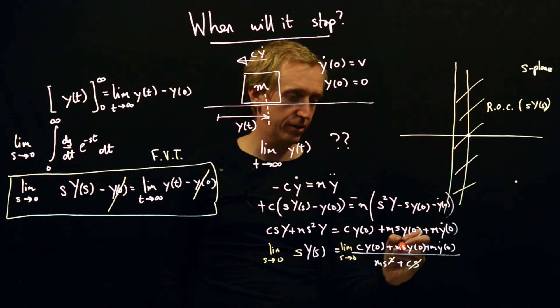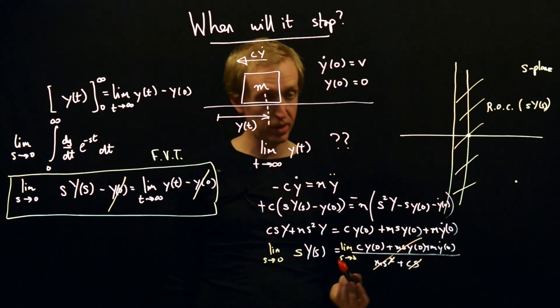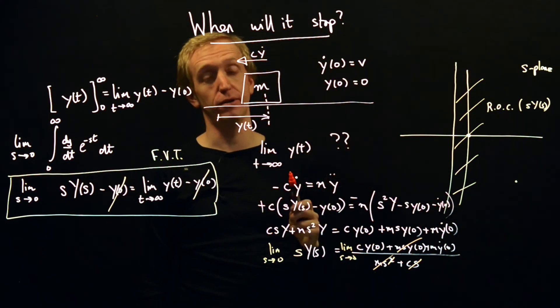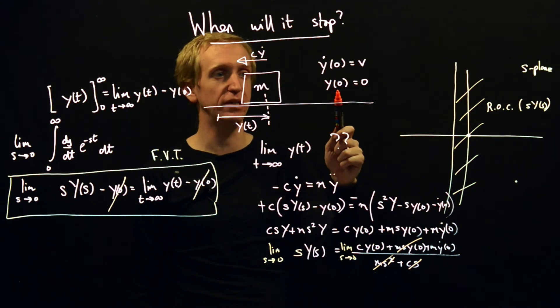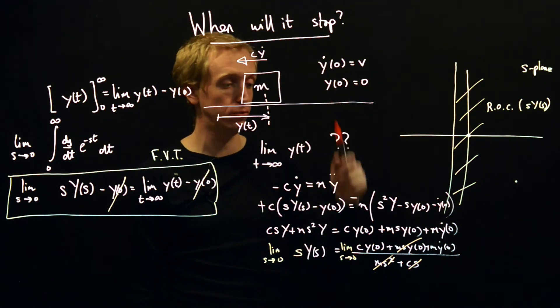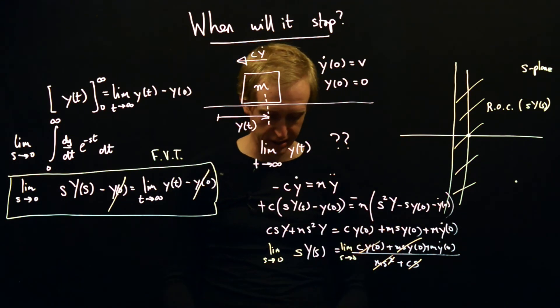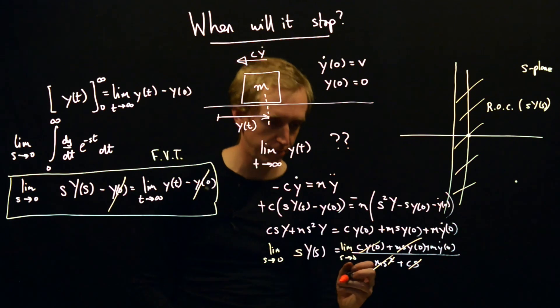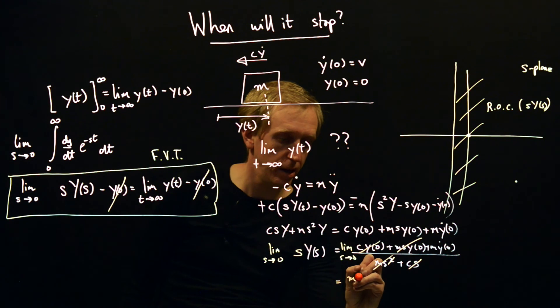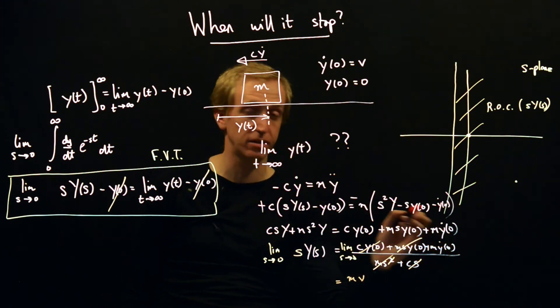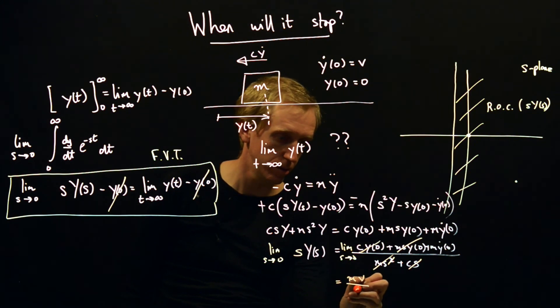Well, lim s goes to zero kills that term, it kills that term, and then we can also substitute in for our initial conditions, and we conveniently defined our coordinate system, so y of zero was equal to zero, and so that term also goes. And at the end of it all, we're left with the whole thing being equal to m*v, that's our initial velocity, divided by c.